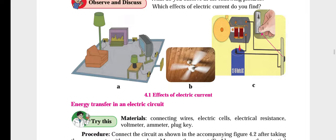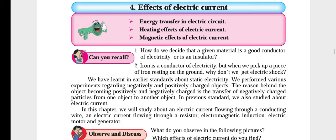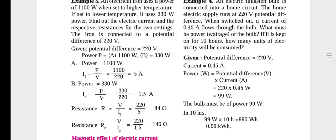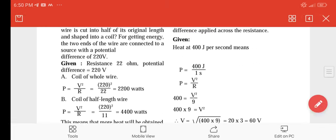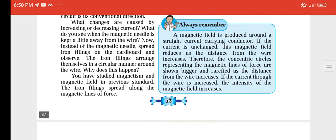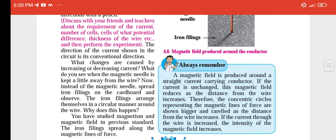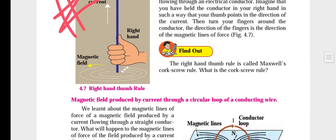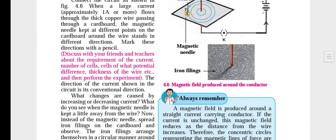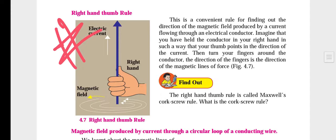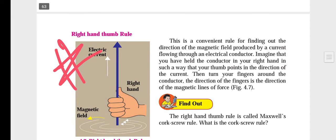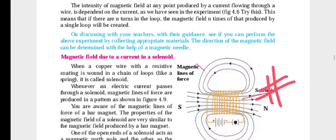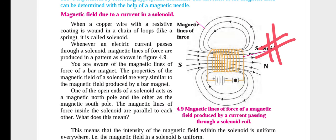When we move on to the fourth chapter, the important questions come in the form of distinguish — electric motor versus electric generator distinguish. Also, what is the right-hand thumb rule? One minute — let me move to that page. Right-hand thumb rule definition and solenoid are important.